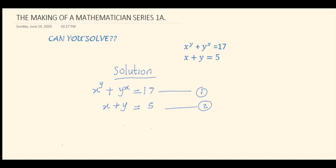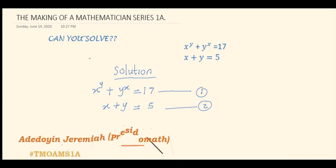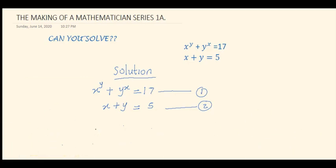Hi everyone, you are welcome to the Making of a Mathematician series 1A. Today we are going to be solving a simultaneous equation displayed on the screen: x raised to power y plus y raised to power x equals 17 is the first equation, and x plus y equals 5 is the second equation.